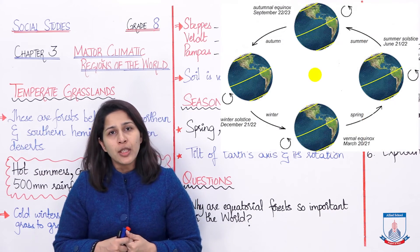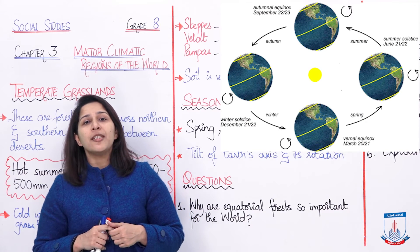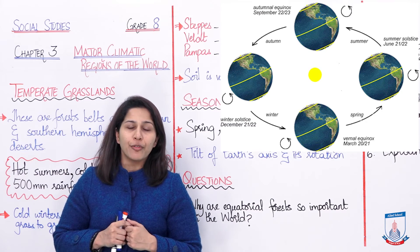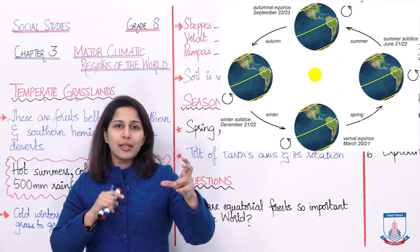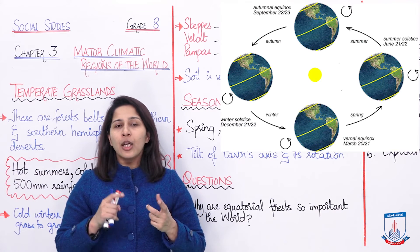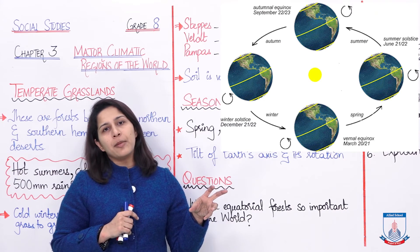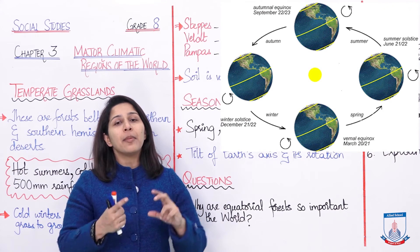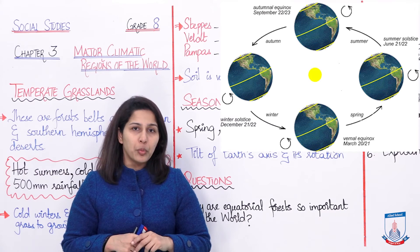Right now, the picture you are seeing on your screen will show you how different seasons are caused in different regions of the world. It gives you four snapshots of Earth around the sun, and these four snapshots describe in detail how autumn, spring, summer, and winter are being experienced by different parts of the world.